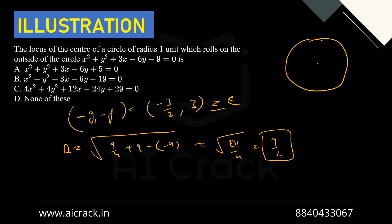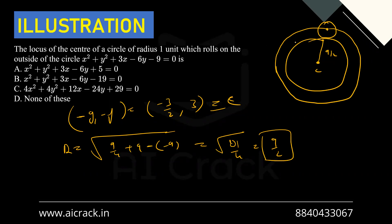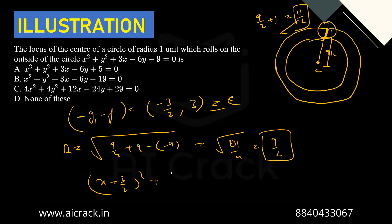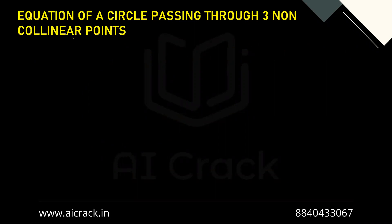The given condition is that there is a circle of radius 1 unit rolling on the circumference of this circle. We have to find the locus of the center of that smaller circle. Since it rolls on the outside, the locus is another circle with the same center (−3/2, 3) and radius 9/2 + 1 = 11/2. So the equation is (x + 3/2)² + (y − 3)² = (11/2)².